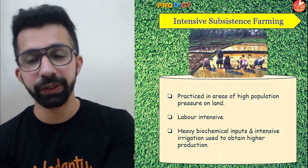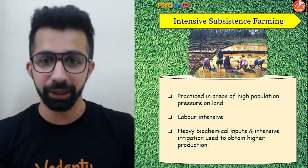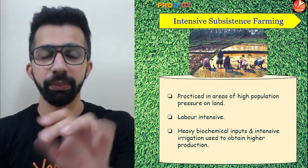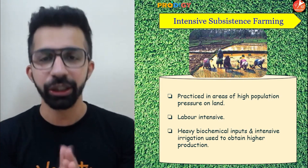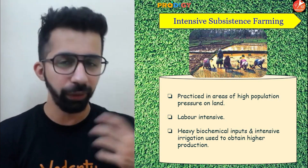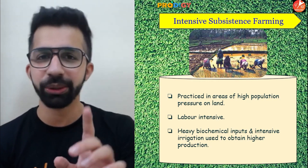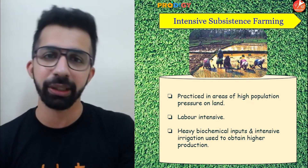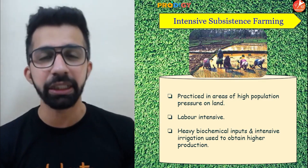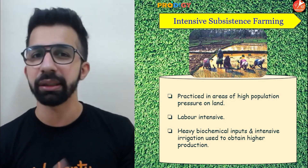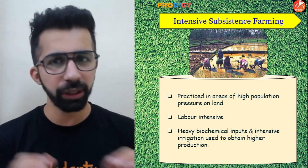The next type is intensive subsistence farming. It is practiced in areas of high population pressure on land — countries like India where population is large and available land is limited, so the land must be used fully throughout the year. It is labor-intensive farming, meaning more laborers are used compared to machines. It depends on heavy biochemical inputs like intensive irrigation, HYV seeds, and chemical fertilizers.